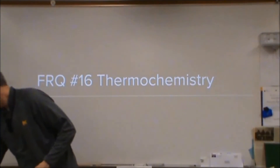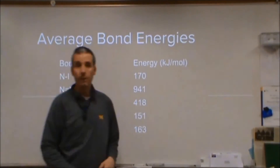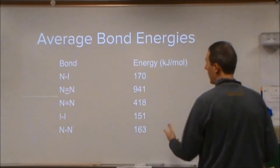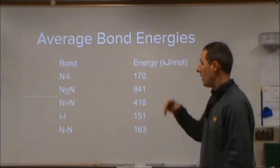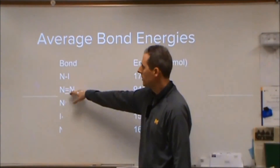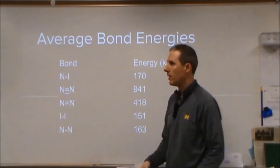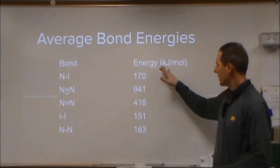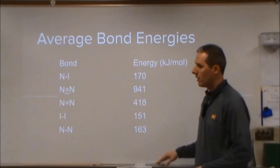At the beginning of the 16th FRQ, we're given a table of data. These are bond energies and we have five different ones. This is meant to be a triple bond — there are some formatting issues — and you can see all the energies here.